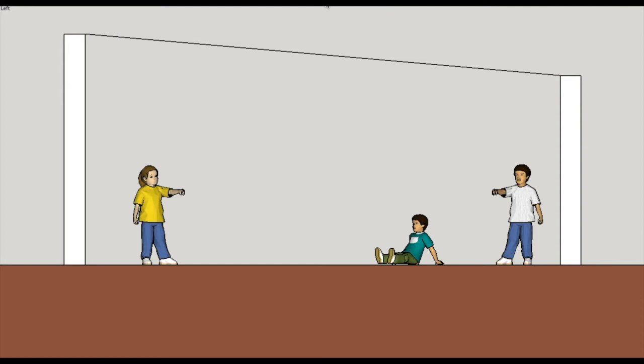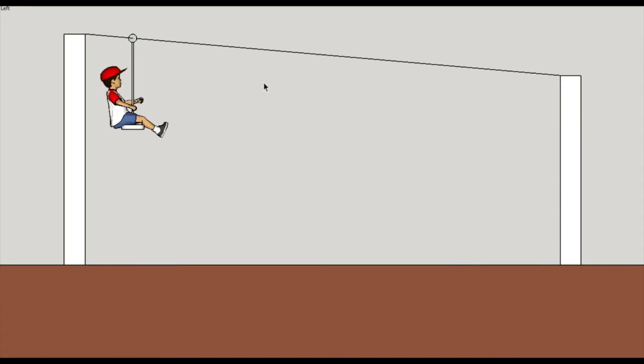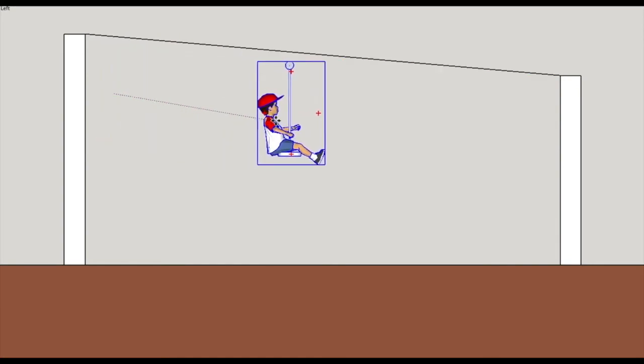So this represents an extreme case for a zip line where there's no sag. This is a cable that's stretched very tightly. You can imagine that a kid on a zip line like this, if it doesn't have any sag or any give, this kid's just going to accelerate all the way down until he slams into the end, and that's not good.